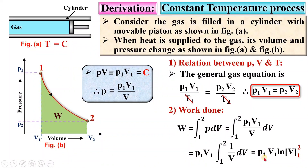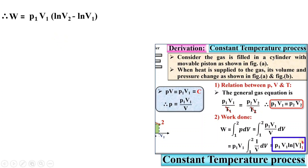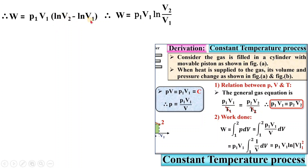Applying the limits: W = P1V1 (ln V2 − ln V1), which simplifies to W = P1V1 ln(V2/V1). This is the equation for work done during the constant temperature process.